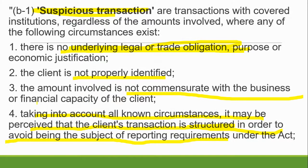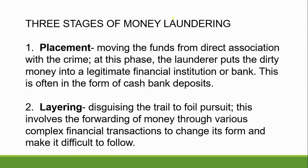If you have 500,000 and ask two persons to deposit it into your account, that is a suspicious transaction. Also, a suspicious transaction arises when there is no underlying legal trade obligation — for example, if you are a jeepney driver or tricycle driver and you deposit 200,000 or 500,000, that is suspicious because there's no underlying legal grounds for where that money came from. Another basis: the client is not properly identified, or the amount is not commensurate with the business or financial capacity of the client.